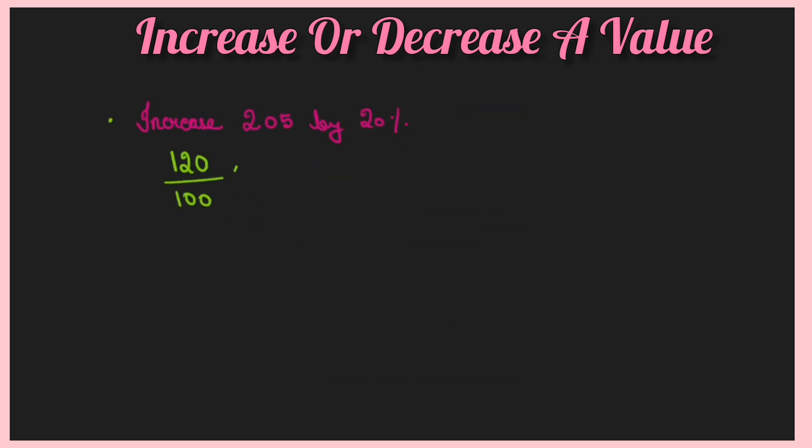Increase 205 by 20 percent. So directly I'm doing it: 20 percent means 120 by 100 into 205 directly. Now you just need to multiply 120 into 205. Once you multiply, just divide by 100. In this case, 00 cancel. So you're getting directly answer 246. That's your answer. Means you're giving 205 rupees, you're getting 246 rupees. This is very easy.